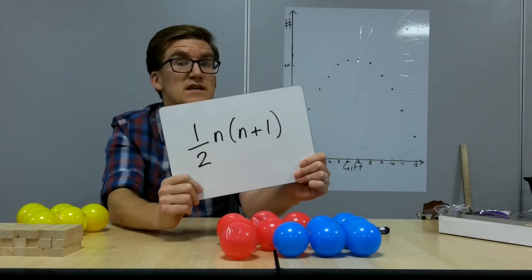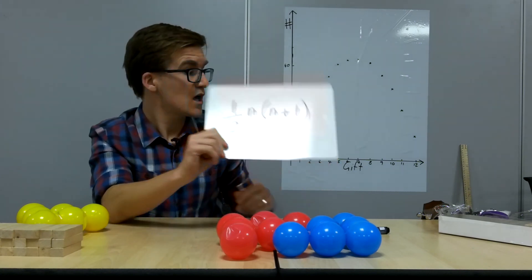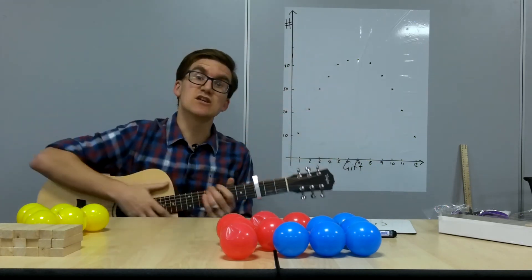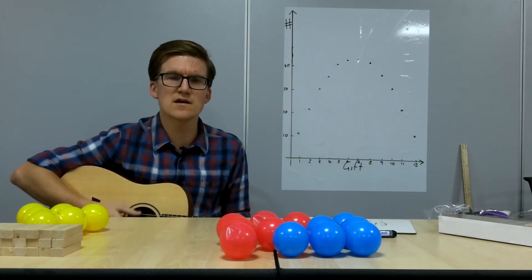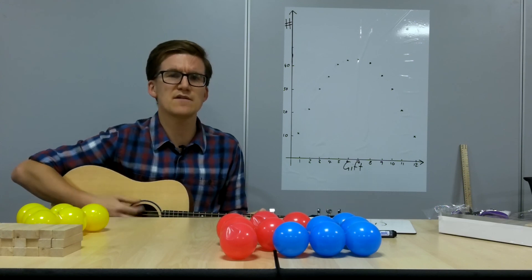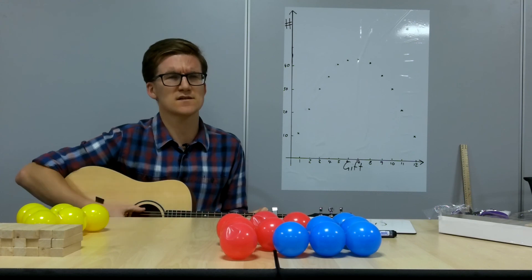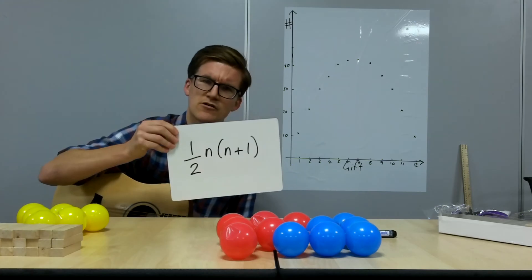So next time you're at carol singing, if you want to get quicker to the end of this song and get your money a bit more quickly, you don't really need to sing it right the way through to the end. You can just use that next time. Something like, On the nth day of Christmas my true love gave to me one half times n times n plus one gifts. Cumulatively. Merry Christmas!